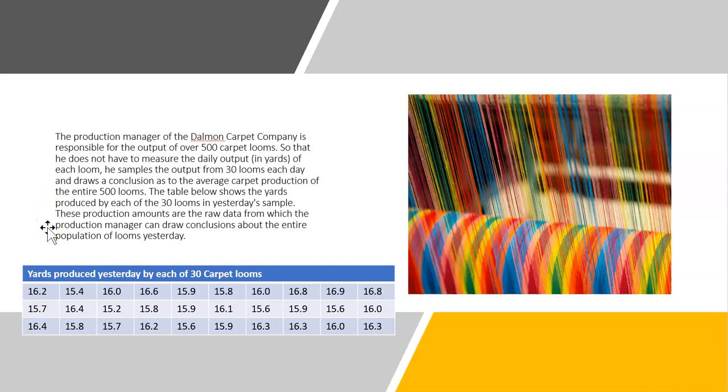The table below shows the yards produced by each of the 30 looms in yesterday's sample. These production amounts are the raw data from which the production manager can draw conclusions about the entire population of looms yesterday. This manager wants to see the output of 500 carpet looms, which is actually our population.